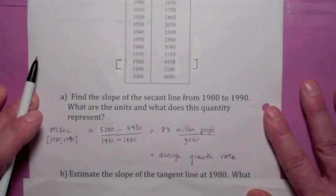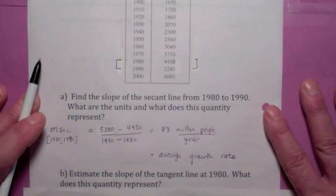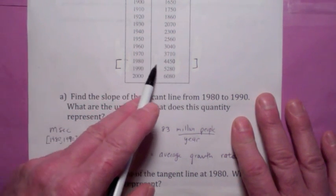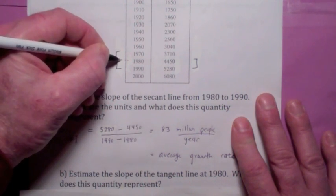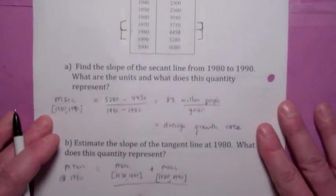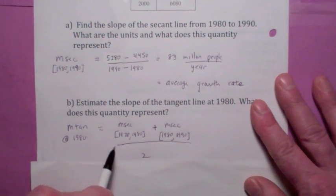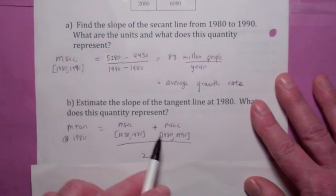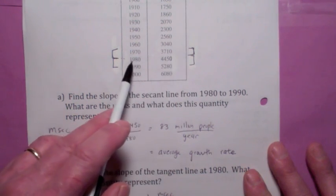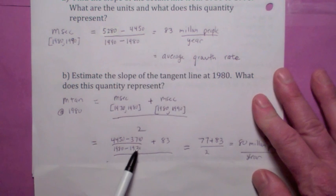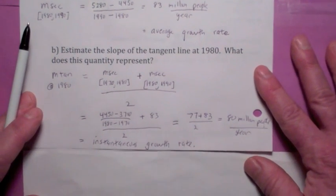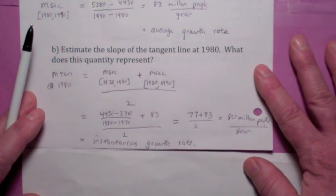How would you compute the slope of the tangent line from a table, and what would that mean? The convention we use is: instead of just using the slope of the secant line from 1980 to 1990, we also compute the slope of the secant line from 1970 to 1980 and average the two. The slope from 1970 to 1980 is 4450 minus 3710 divided by 1980 minus 1970, which gives 74. We average that with 83 to get 80 million people per year — that's our best approximation to the instantaneous growth rate at 1980.